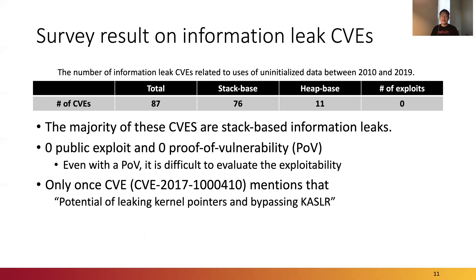This table shows the statistics of 87 Linux kernel CVEs that are related to uninitialized data uses. We can see that most of these CVEs are stack-based information leaks. However, evaluating the severity of these CVEs is extremely difficult because no public exploit is available for any of them. Exploiting these vulnerabilities to leak sensitive information usually requires manual and complicated manipulation of the kernel layer that is costly and time consuming. Also, only one CVE mentions the potential of leaking kernel pointers and bypassing KASLR, which leaves an impression that these vulnerabilities have low security impact.